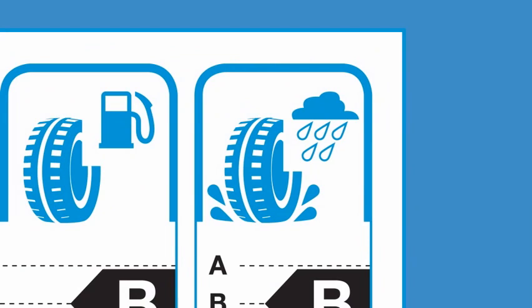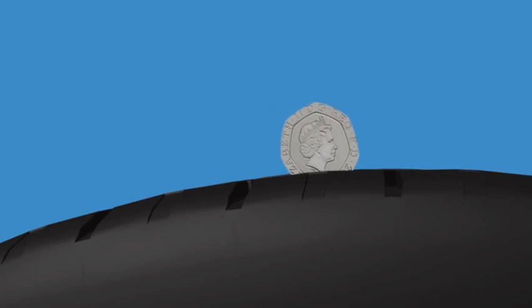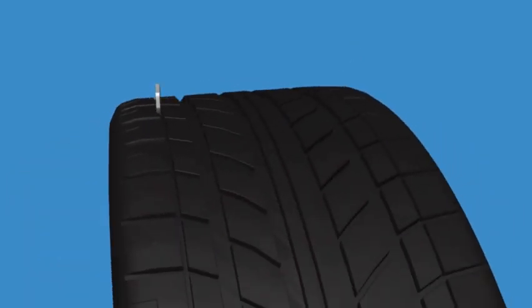So, check your tyres regularly, at least once a month. Just place a 20p piece into the tread. If the outer rim of the 20p is obscured, you're okay. Check on at least three areas around each tyre.